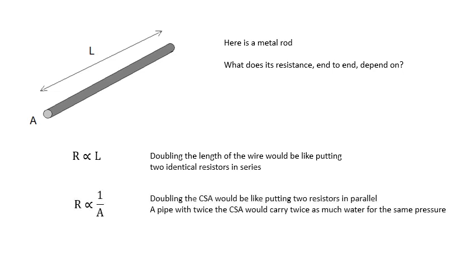The resistance will be inversely proportional to the cross-sectional area. So A on the diagram, that's pi R squared, the cross-sectional area, because doubling the cross-sectional area would be like putting two resistors in parallel. So the resistance would be half as much.